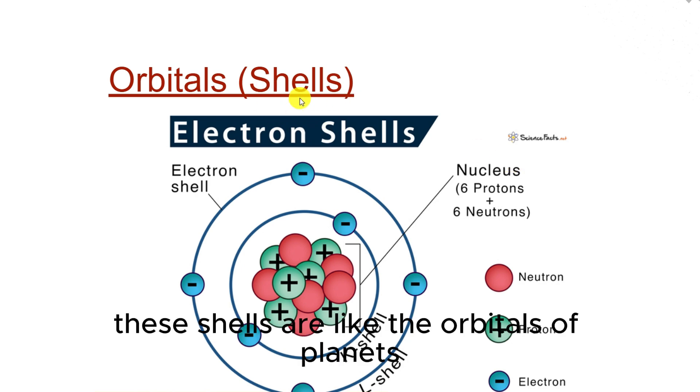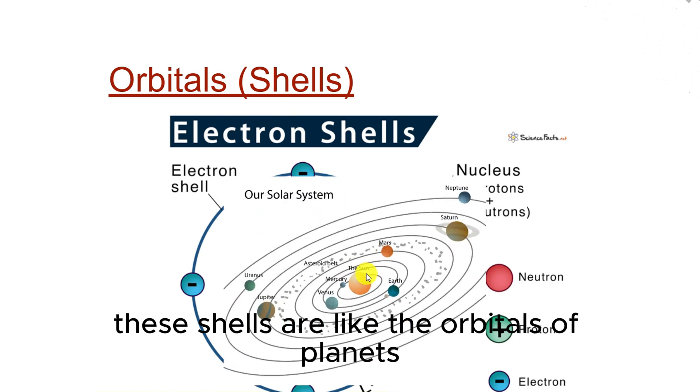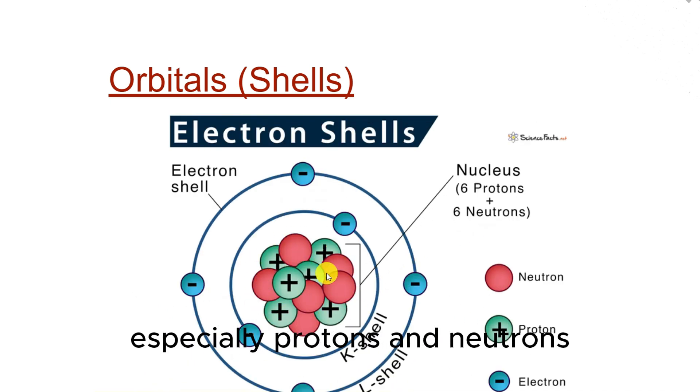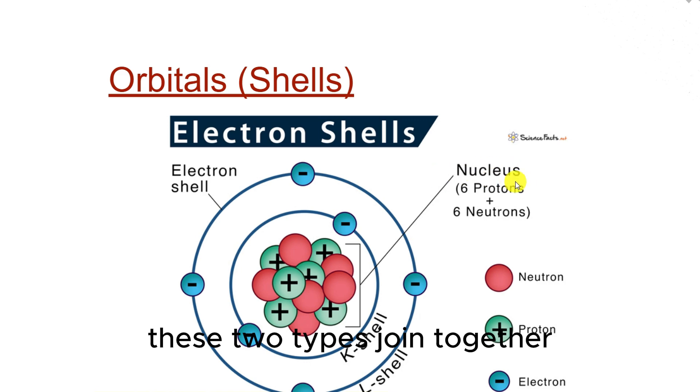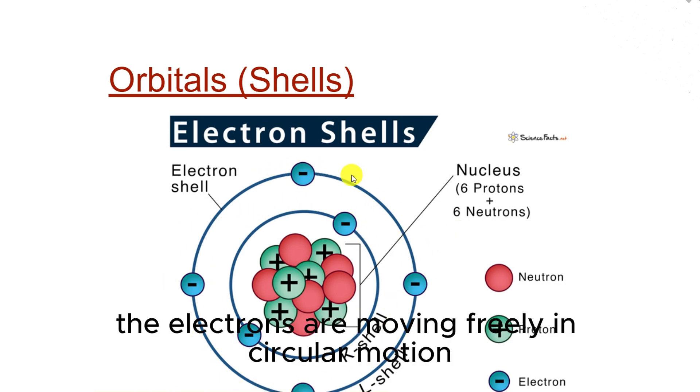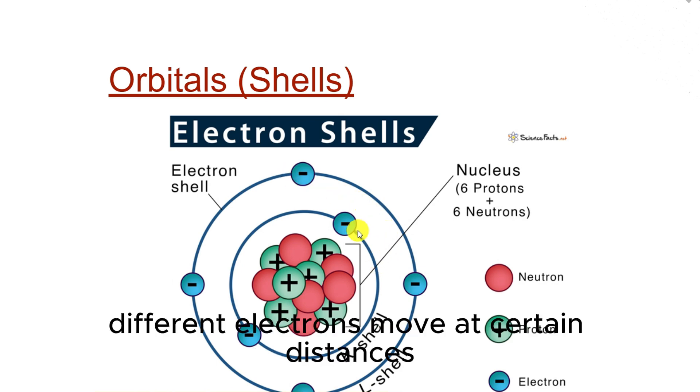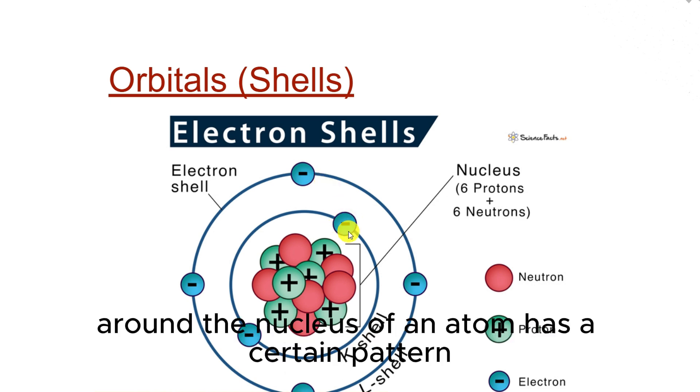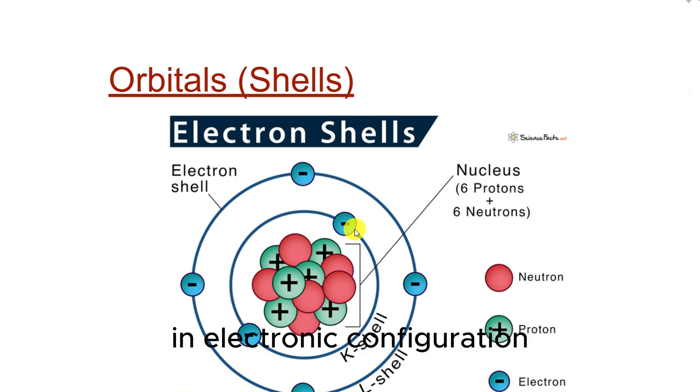These shells are like the orbitals of planets. In the middle, we have the masses, especially protons and neutrons. These two types join together and create the nucleus of an atom. Around the nucleus, the electrons are moving freely in circular motion. Different electrons move at certain distances, creating a certain orbit. And the way electrons move around the nucleus has a certain pattern. In electronic configuration, all we pay attention to is that pattern.